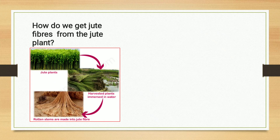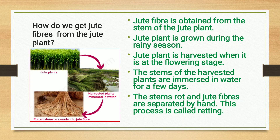Jute fiber is obtained from the stem of the jute plant. The jute plant is grown during the rainy season and harvested when it is at the flowering stage. The stems of the harvested plants are immersed in water for a few days. The stems rot and jute fibers are separated by hand. This process is called retting.